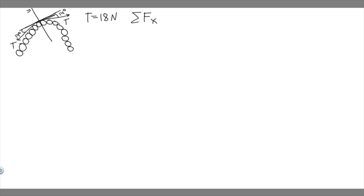This is the y-axis and this is the x-axis. To take the sum of the forces in the x, we have to find the x component of this tension force. What you want to do is imagine it like a triangle. If we want to find the x component — I'm labeling this x — then this part will be the y, where I'm drawing the line right now. So the tension t is going to be the hypotenuse, and x is the adjacent side to the angle.